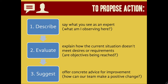The same thing goes for proposing action or trying to convince someone to be on your side. First, you have to describe what's going on — say what you're seeing. If you're writing a proposal, you might talk about what's going on in a company or for an organization. Then you have to evaluate it, explaining how it doesn't meet the desires or requirements of your audience. Are the objectives being reached? If not, then you suggest — you make advice for improvement. How are we as a team, organization, or company well situated to turn current conditions into desired ones?